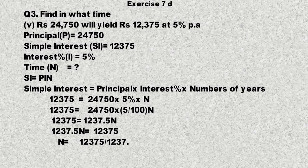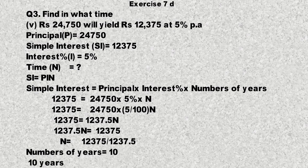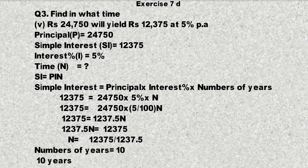12,375 کو 12,375 سے divide کریں گے تو n = 10 سال آجائے گا۔ تو 10 سال ہمارا جواب ہوگا۔